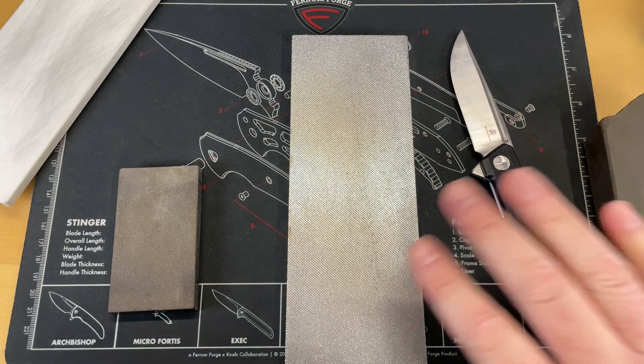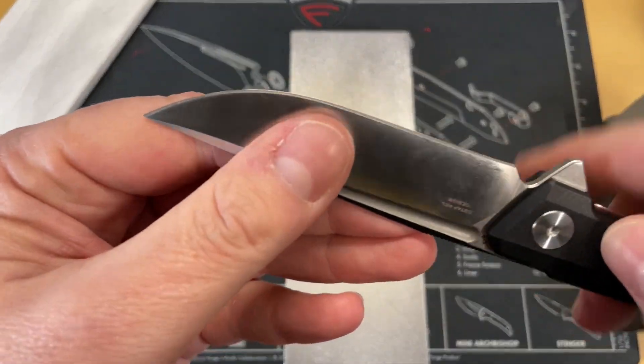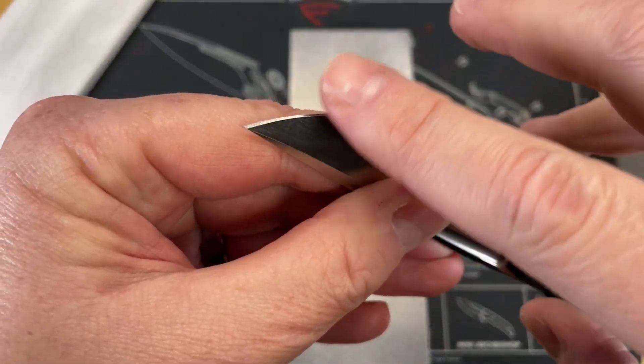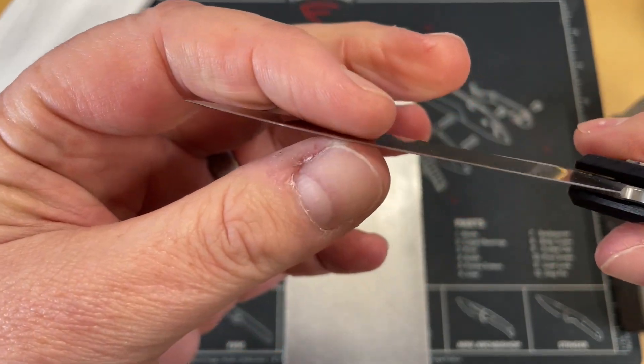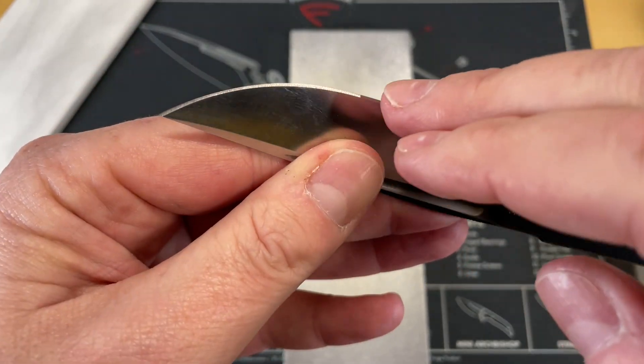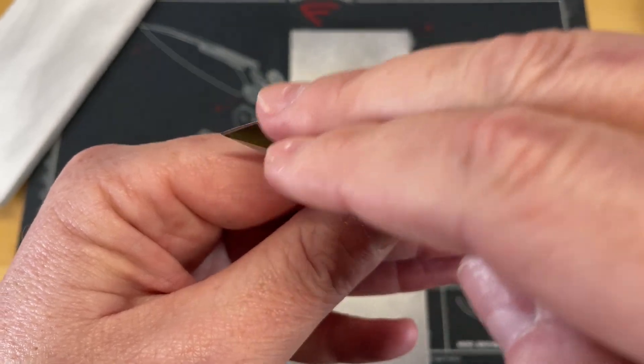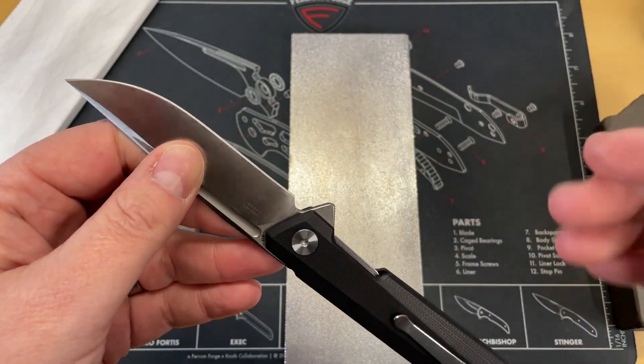What's going to happen is these stones that you use are not only going to remove the material here at the edge and allow you to realign that and bring those two edges back together. But they're also imparting a scratch pattern on this that acts a lot like a saw.